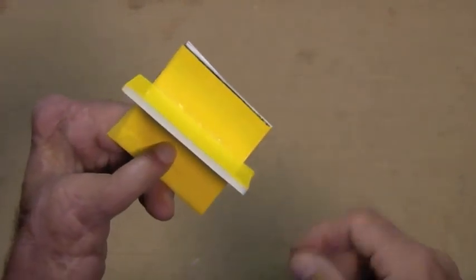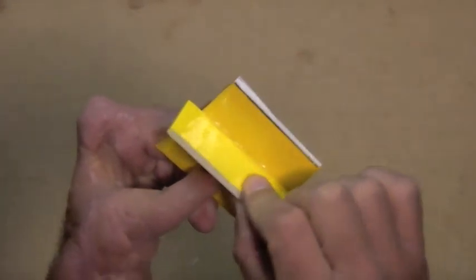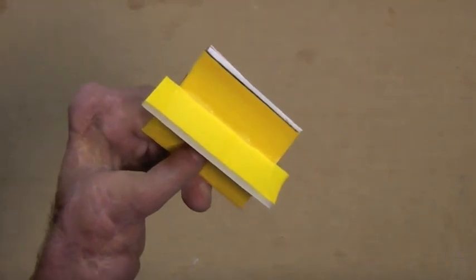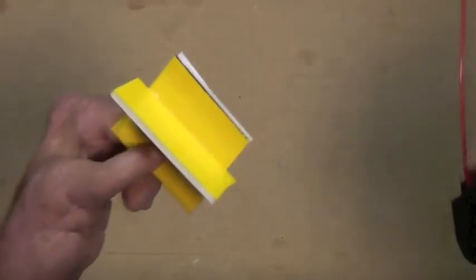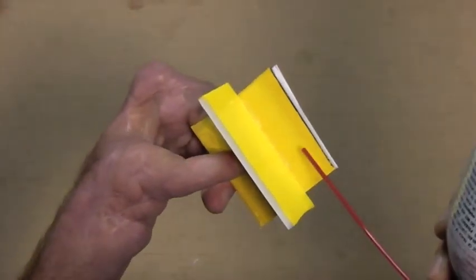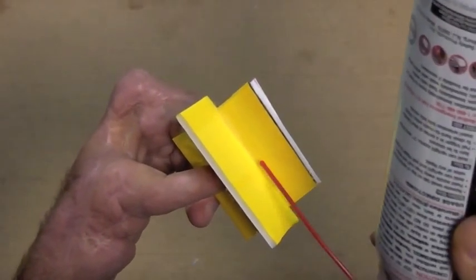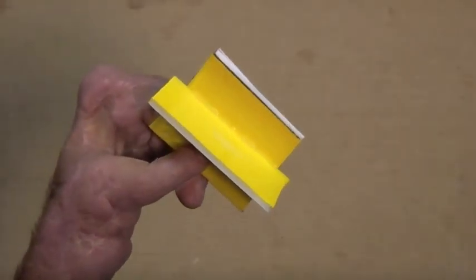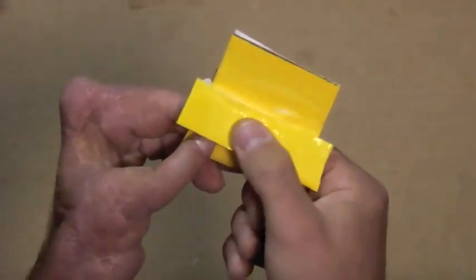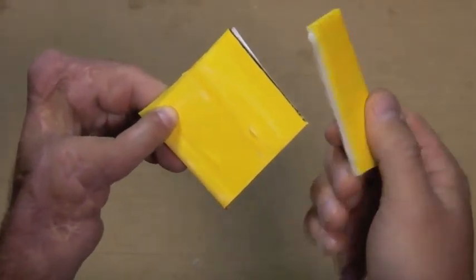But another useful adaptation of that principle is if you ever have a joint that you need to remove cleanly, you can use dust off. Turn the can upside down so it comes out liquid and spray it liberally onto that joint where the hot glue is. Just get it nice and frigid and it will become brittle so that you can typically just break it right apart.